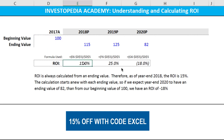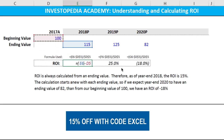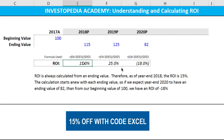Let's test this out. In our table we can see that the last price for 2018 was 115 and our beginning price was 100, and therefore the return on investment is 15 percent. This carries through throughout the table.